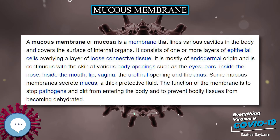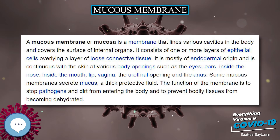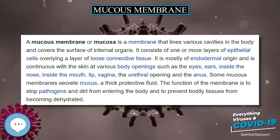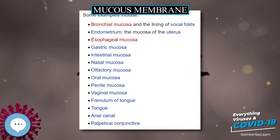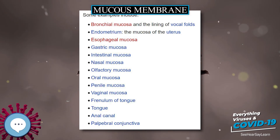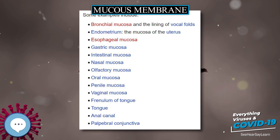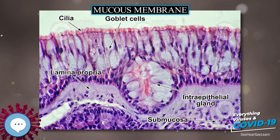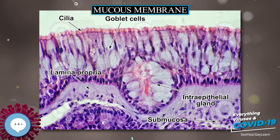Developmentally, the majority of mucous membranes are of endodermal origin. Exceptions include the palate, cheeks, floor of the mouth, gums, lips, and the portion of the anal canal below the pectinate line, which are all ectodermal in origin.